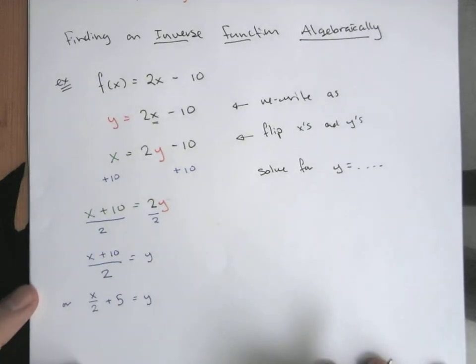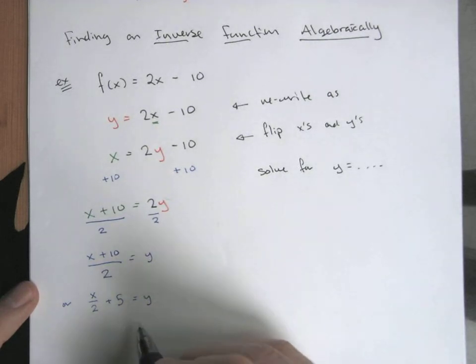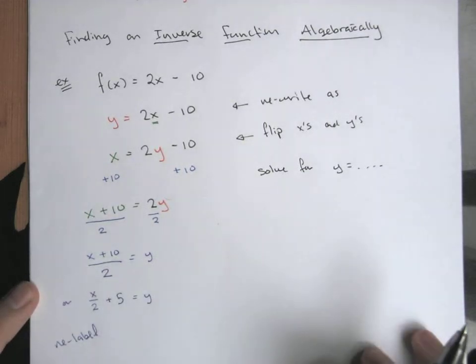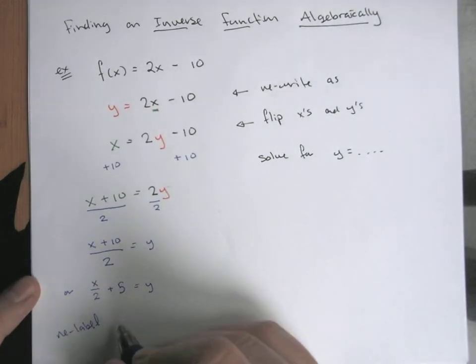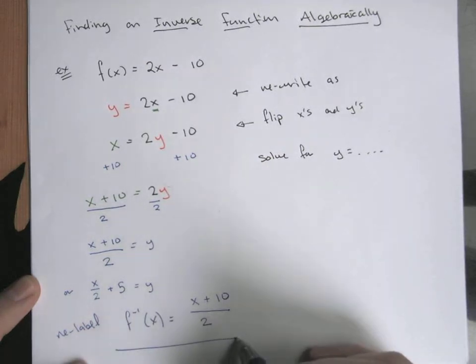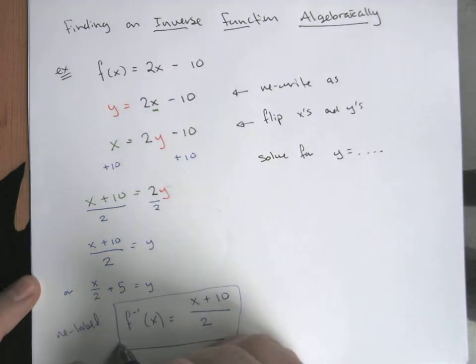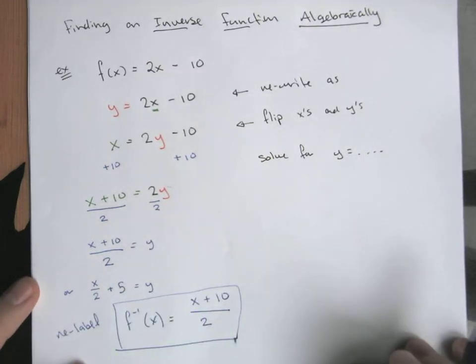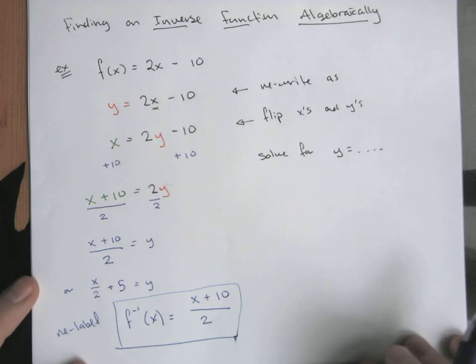Y equals either of these things. I've essentially reversed my operation. What I'm going to do then is kind of relabel. This becomes f inverse of x, and this becomes (x + 10)/2. That seems perfectly fine to me. That maybe has the most obvious relationship back to the original.